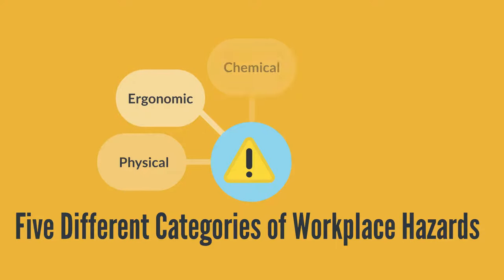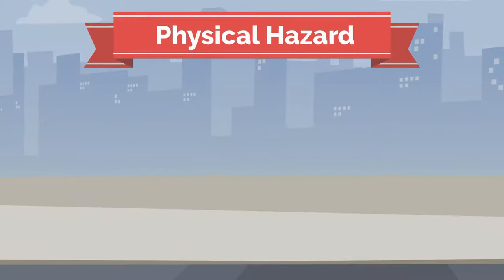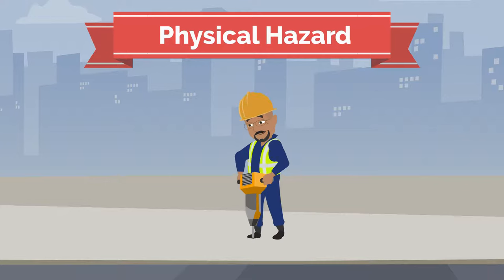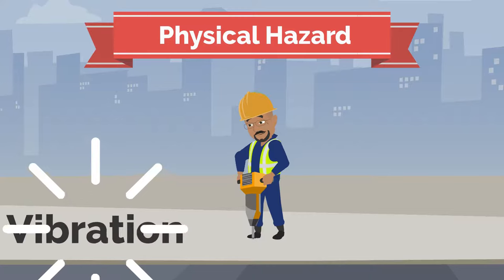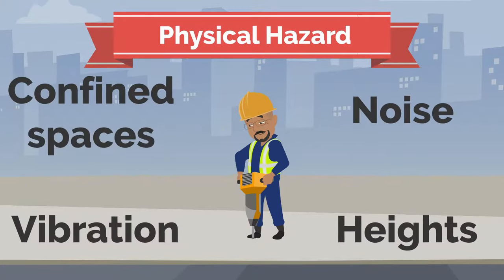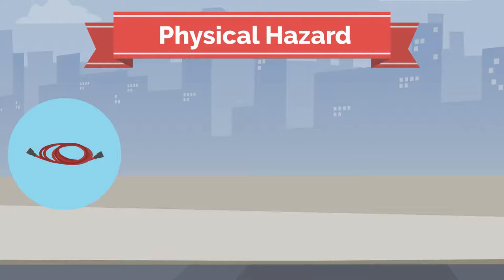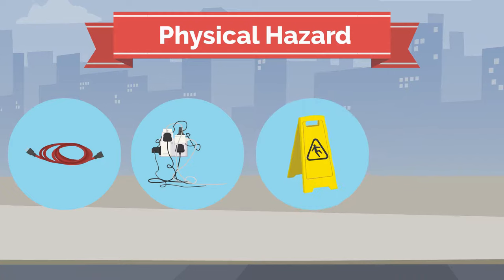There are five different categories of workplace hazards: physical, ergonomic, chemical, psychosocial, and biological. A physical hazard is anything in the environment that could cause harm to your physical body. This includes vibration, heights, noise, and confined spaces. Some examples of physical hazards include wires left laying on the floor, faulty electrical appliances, slippery or wet floors, and falling objects from high shelves.